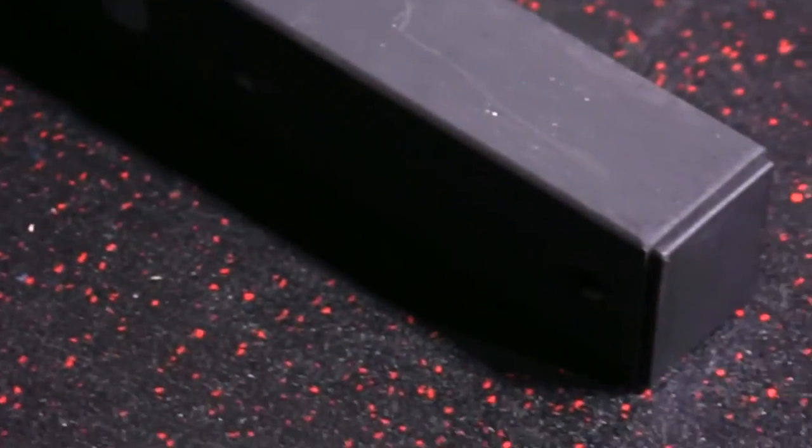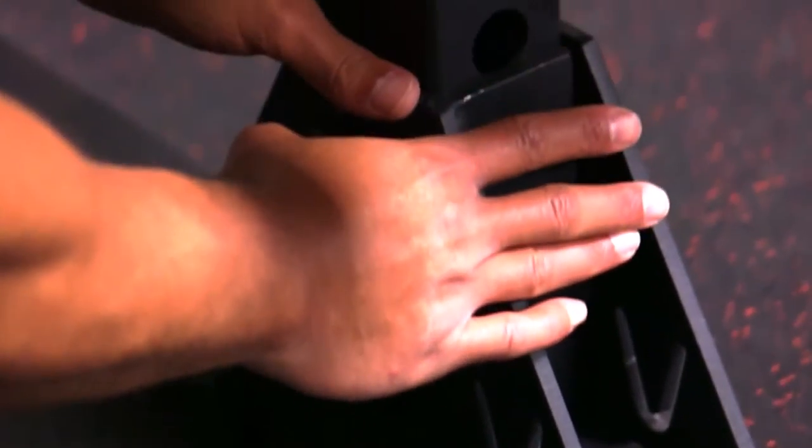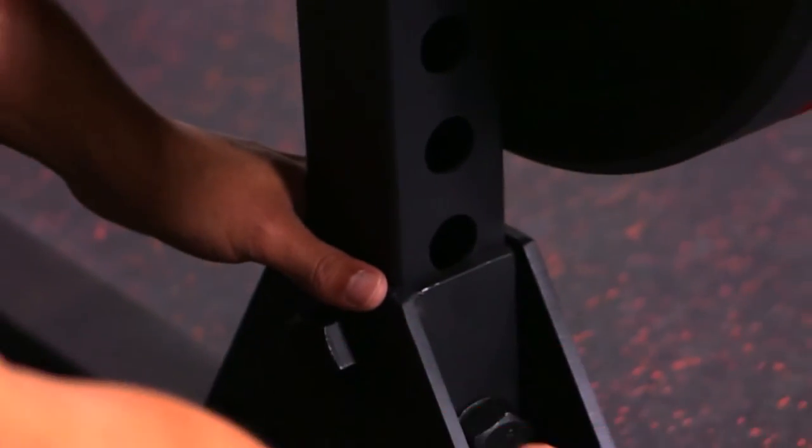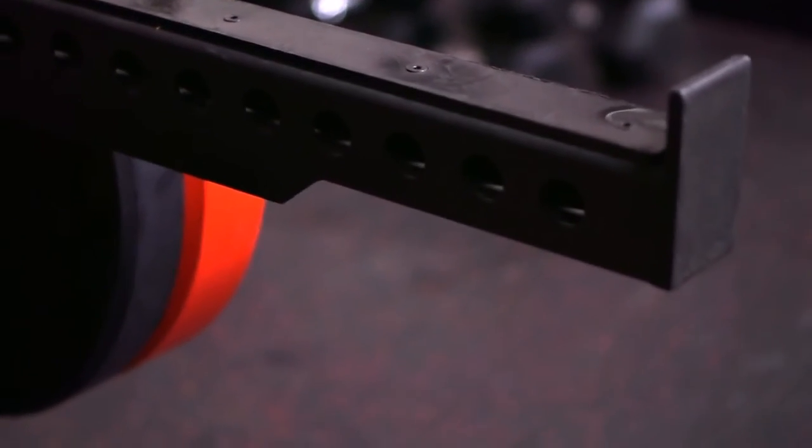You've got 1 inch holes on the base too so you can adjust the base. We position it pretty much in the middle which we feel is the best for stability. You don't want to move this to where the safety spotters go over the base because it becomes unstable at that point.